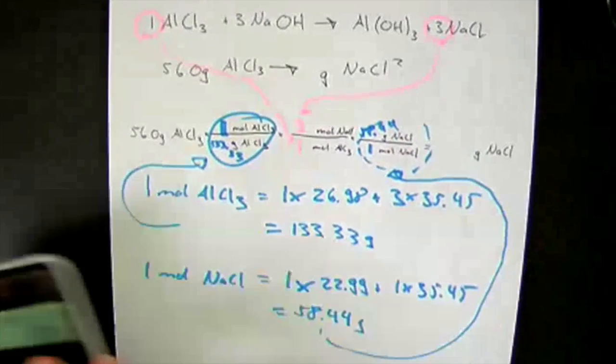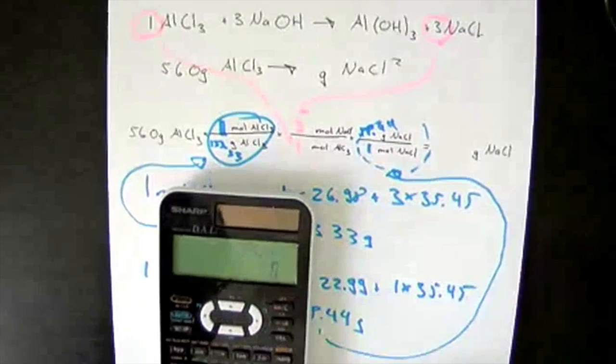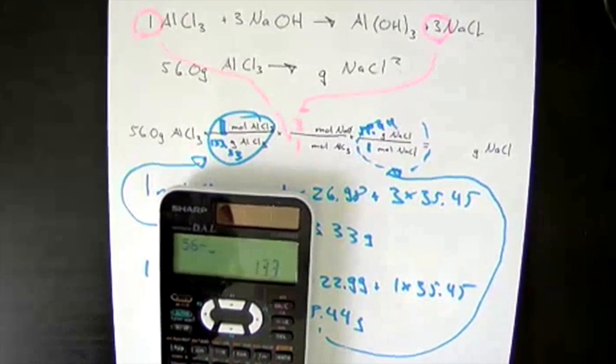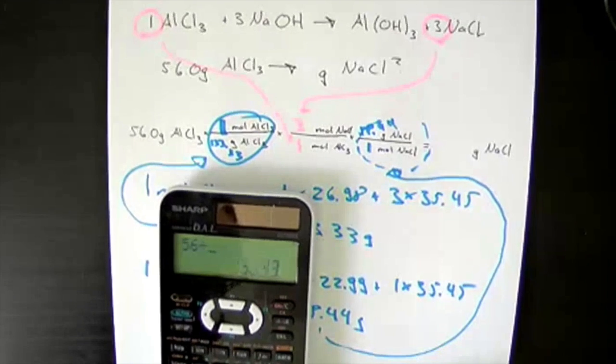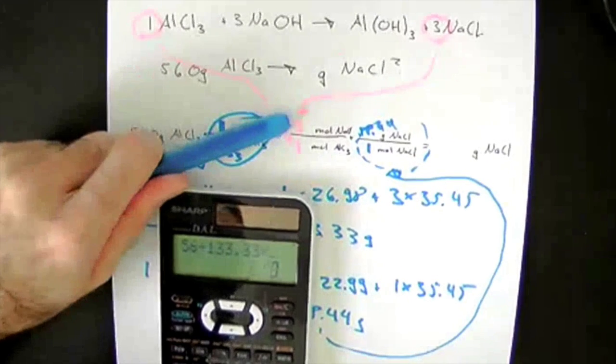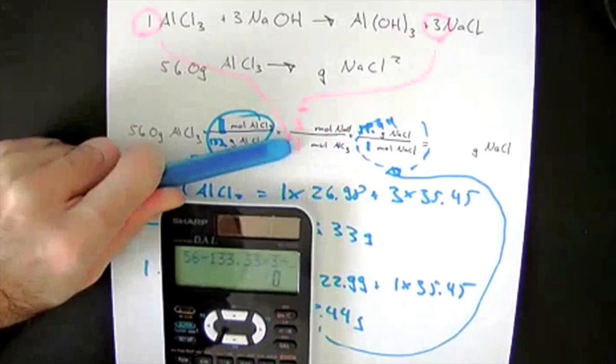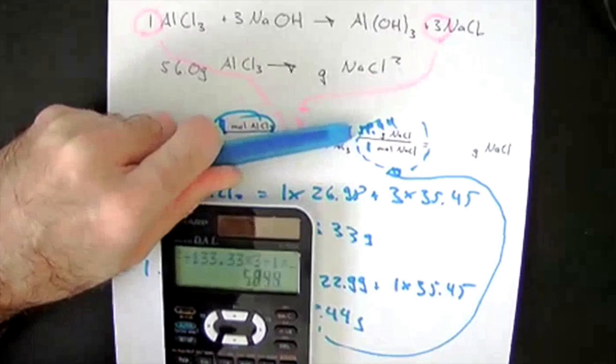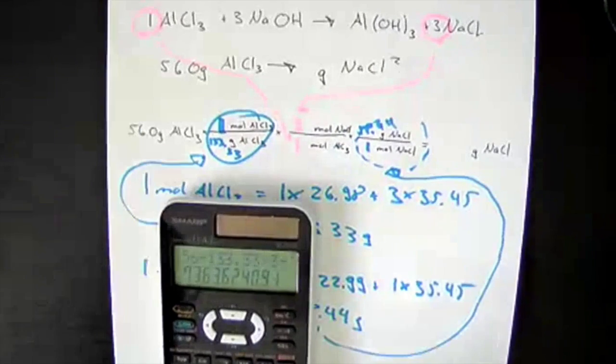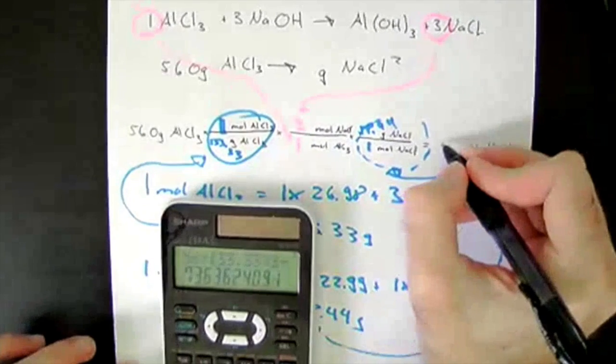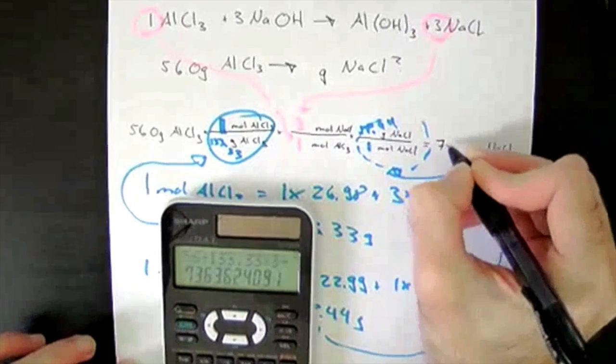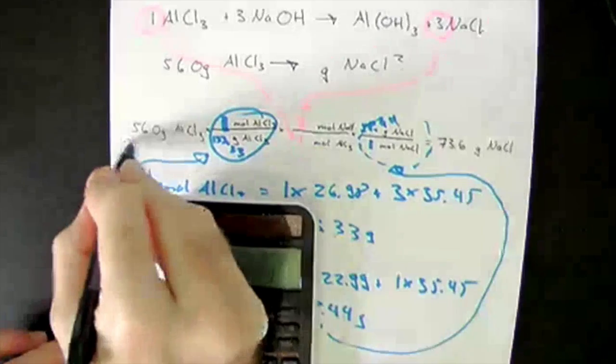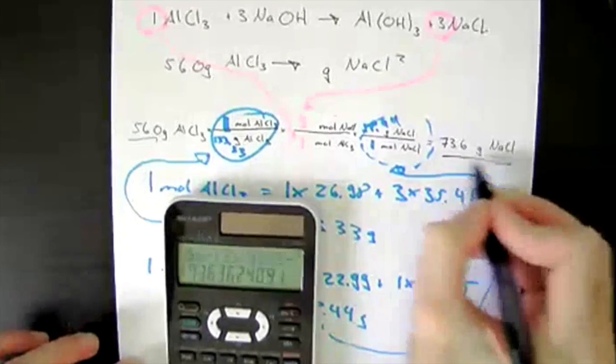And now I'm typing everything in my calculator. So 56 divided by 133.33 times 3, divided by 1 times 58.44, so it gives me 73.6 grams of sodium chloride. I started with 2 sig figs, I'm going to end with 2 sig figs.